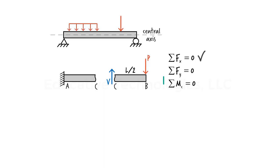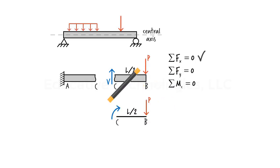To satisfy the third equilibrium equation, it is important to recognize that P creates a moment about point C. For the sum of the bending moments to be zero, a bending moment must be present at C. The magnitude of this moment must be equal to the magnitude of the moment that P creates about C. The two moments, however, must act in opposite directions in order for their sum to be zero.